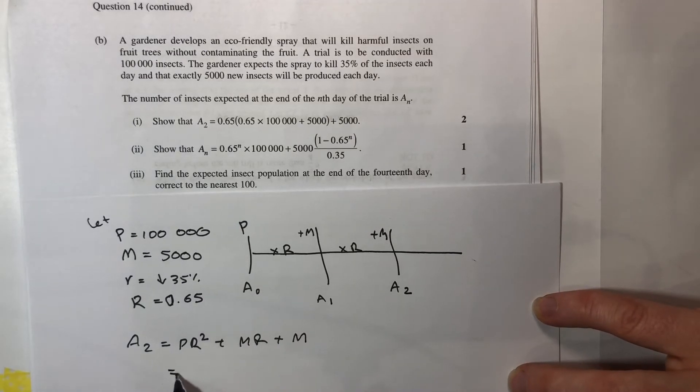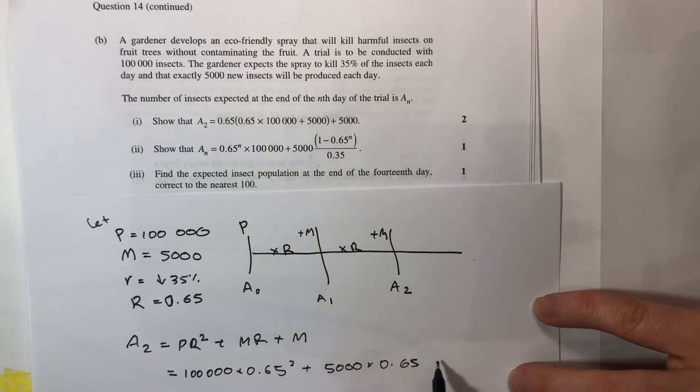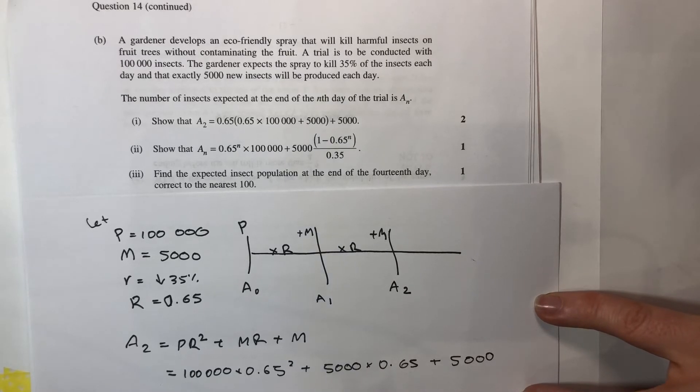Now A2, they want it all in numbers of course so I could put my numbers in here, 100,000 times 0.65 squared plus 5,000 times 0.65 plus 5,000. And for whatever reason, maybe it's just to throw you, they've actually factorised the 0.65 out of the first two terms.